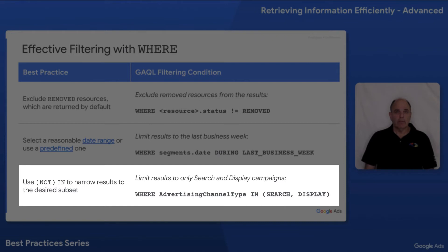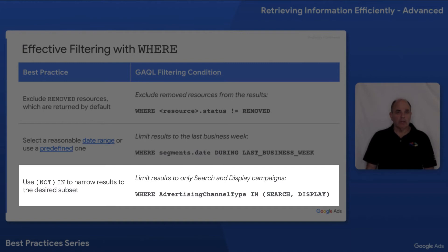And the final easy way is to filter results to be explicit about the subset that you want. For example, there are many different advertising channel types. If you only want search and display, just add that simple clause to the WHERE.